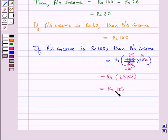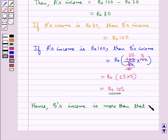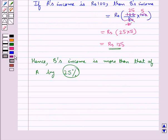So obviously, B's income is more than that of A. Hence, B's income is more than that of A by 25%, since Rs. 125 minus Rs. 100 is Rs. 25. So 25% is our final answer.